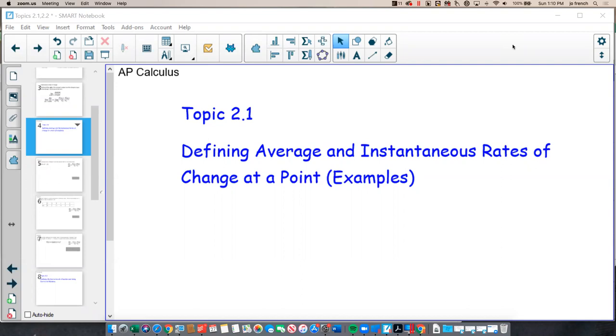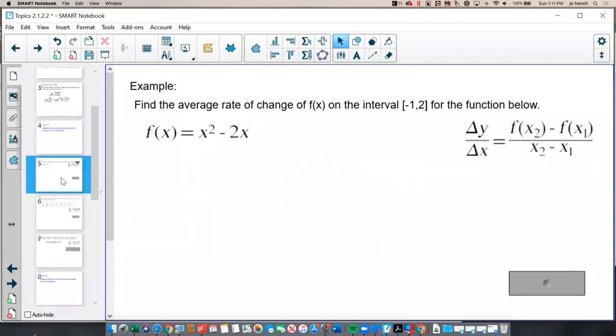So let's look at our first example. Here we want to find the average rate of change of f on the interval from x equals negative 1 to x equals 2 for the function below.